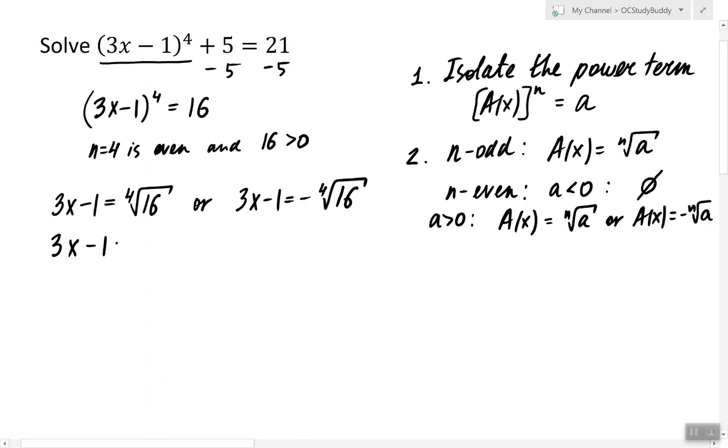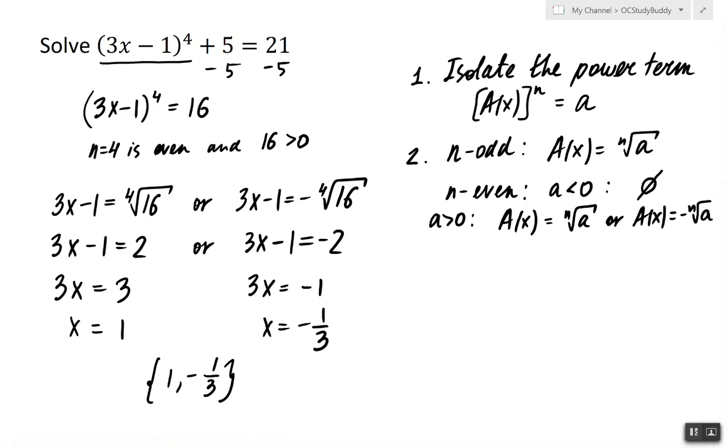The 4th root of 16 is 2, so we have these two linear equations each of which can be solved by simply isolating the variable. So the solution set of this equation is 1 or negative 1/3.